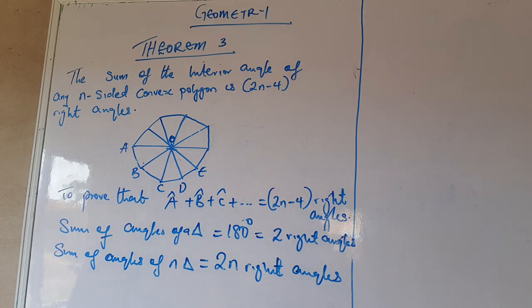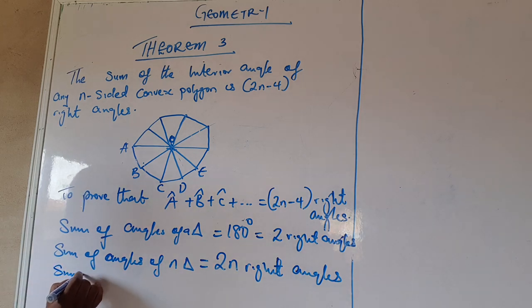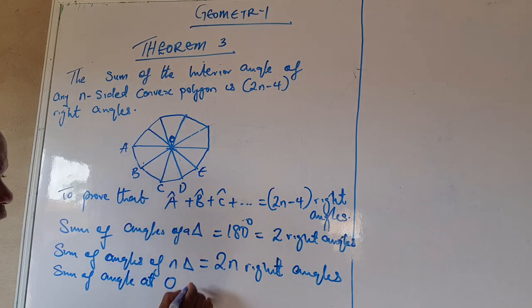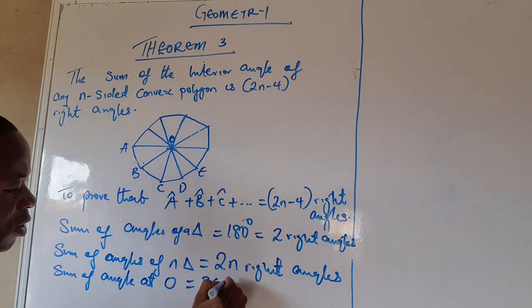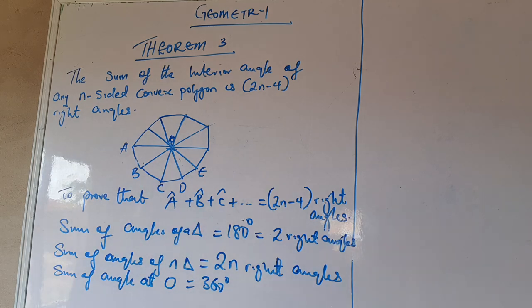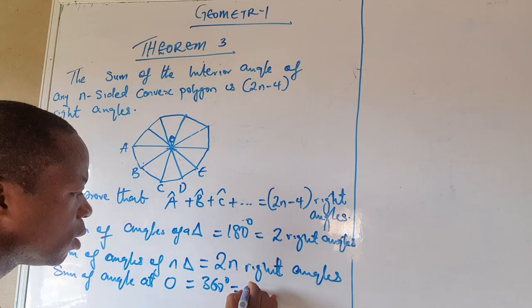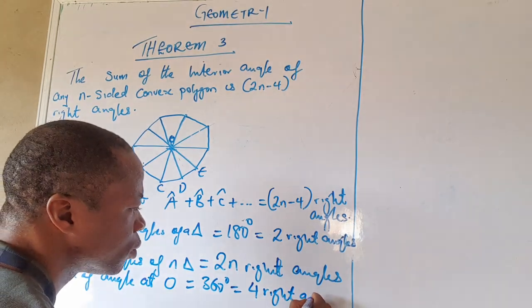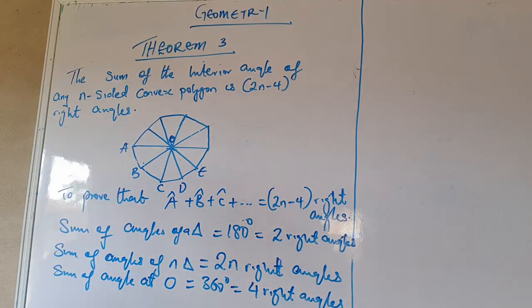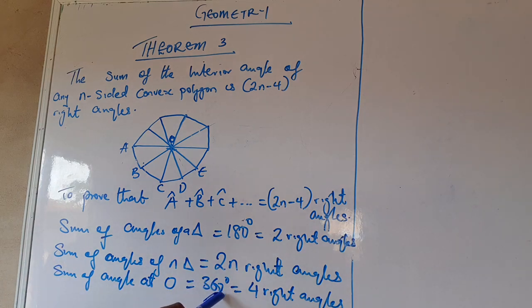Going by this, you will also agree that the sum of angles at a point O is 360 degrees, which is equal to 4 right angles.